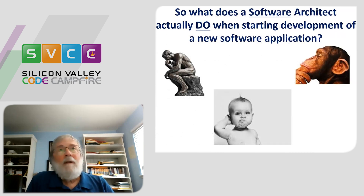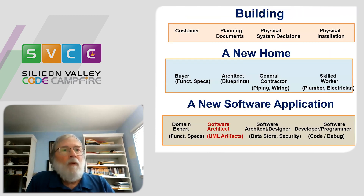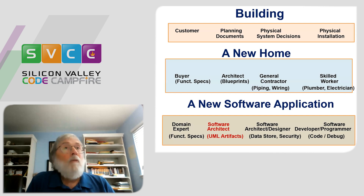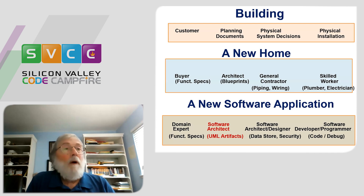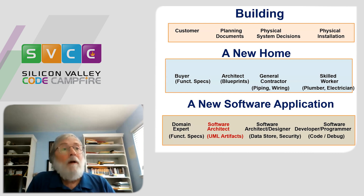So what does a software architect actually do when starting to develop a new software application? It turns out it parallels what the architect did with the house. The buyer becomes the domain expert — if you're designing a library system, it's the librarian; if you're designing a college enrollment system, it's the registrar. They have a set of functional specs. The software architect takes that functional spec and generates, instead of blueprints, a series of UML artifacts — Unified Modeling Language artifacts — which convey the thinking of the domain expert in a way that developers can actually implement.